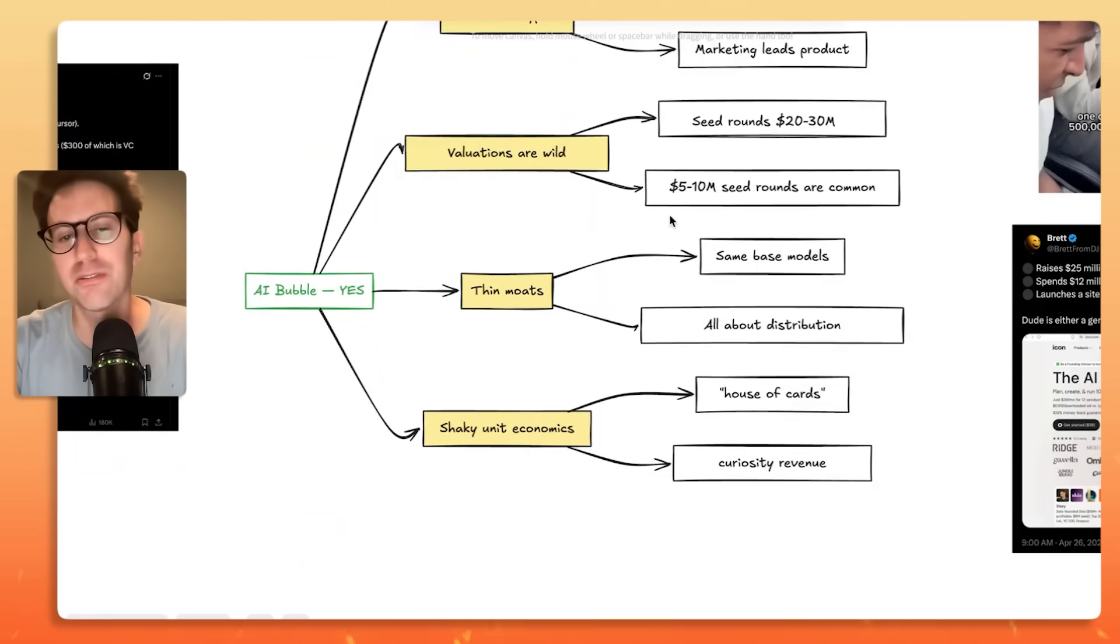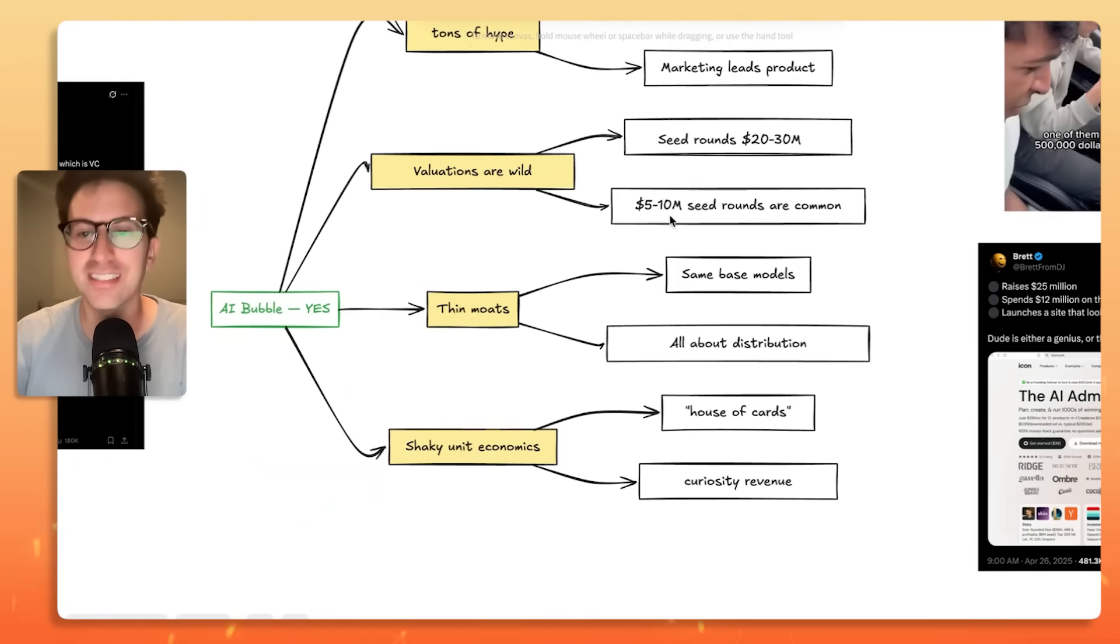The other reason why people say there might be an AI bubble is a lot of these AI startups have the same base model. So it's really all about distribution. It's almost as if the VCs don't really care that the underlying tech is the same. It's almost like they're not sober in that sense. So that's why some people say that there's a bubble because the VCs are just funding these thin-moat companies.